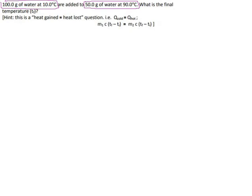What happens? Well, if we have water at 10 degrees and water at 90 degrees, the 90-degree water is going to cool down, the 10-degree water is going to heat up, and they're going to meet at some in-between temperature T.